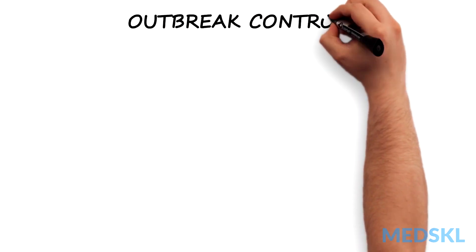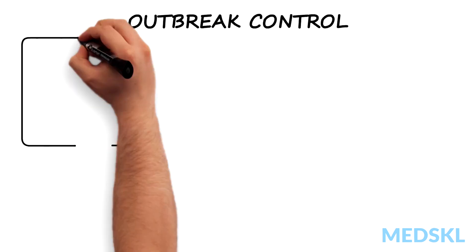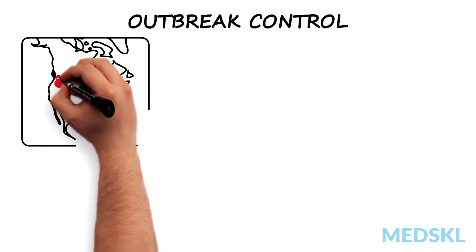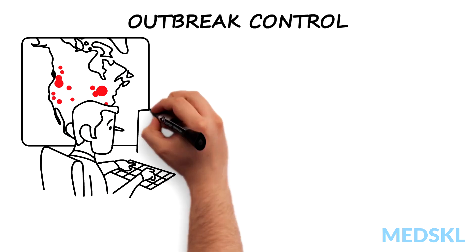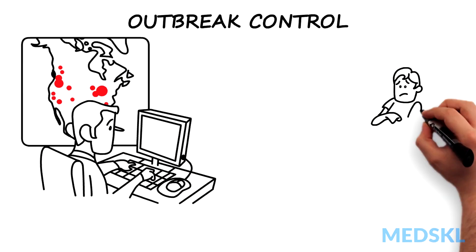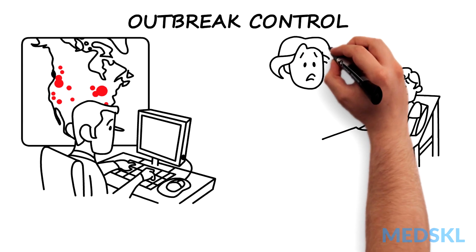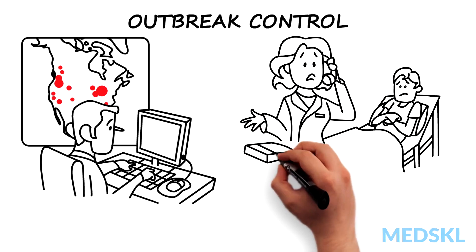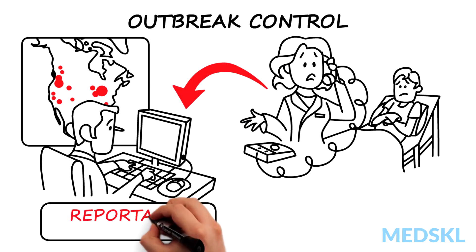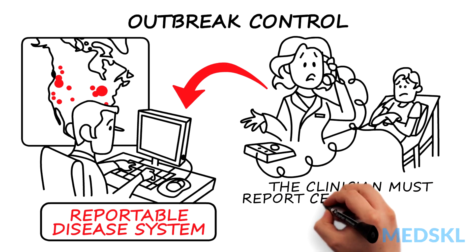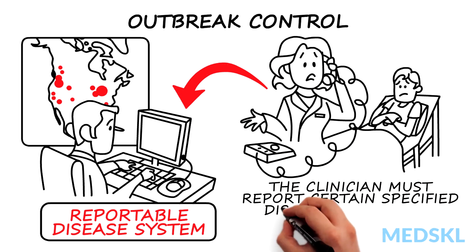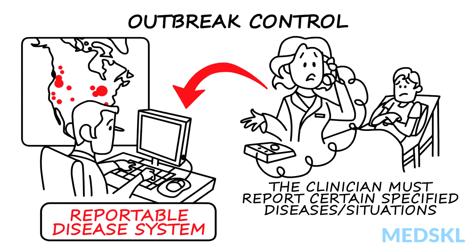Outbreak control starts with the detection of a problem using the public health surveillance system. Surveillance helps to identify emerging problems and intervene early to prevent spread of the disease. Public health uses a number of methods for surveillance. The one that all clinicians should know about is the reportable disease system. The clinician plays an important role in this system by reporting certain specified diseases and situations, generally without waiting for laboratory confirmation.